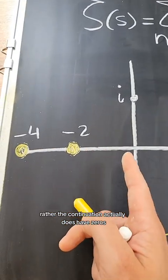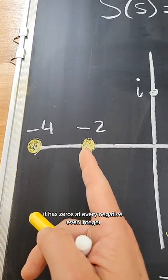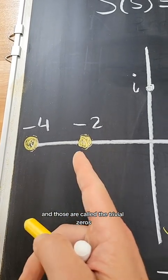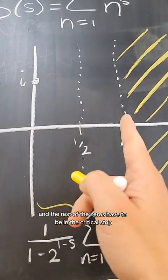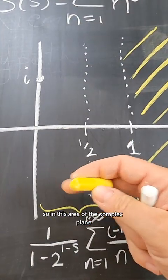actually does have zeros in this side of the complex plane. It has zeros at every negative even integer, and those are called the trivial zeros. And the rest of the zeros have to be in the critical strip. They have to be between zero and one, so in this area of the complex plane.